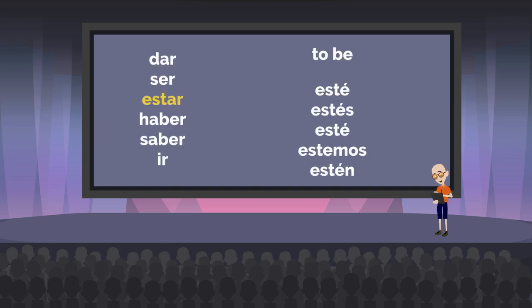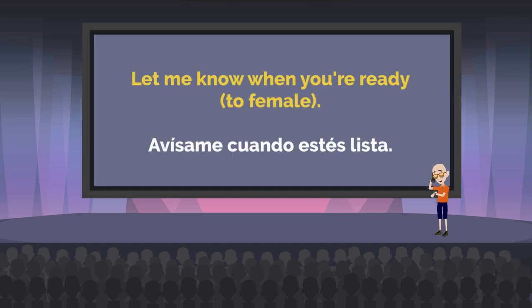And we move on to the other verb for 'to be,' estar. We use estar for temporary states and conditions and location. Our forms are esté, estés, esté, estemos, and estén. For example: 'Let me know when you're ready.' If we're speaking to a female, we could say: avísame cuando estés lista. If it was a male, it would be listo.